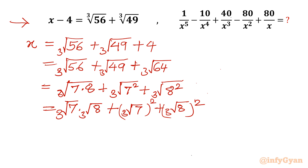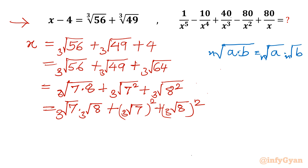I have used here two properties of exponents. Property number 1: the nth root of a times b equals nth root of a times nth root of b. The second property is the power rule: a power b, whole power c, can be written as a power c, whole power b.